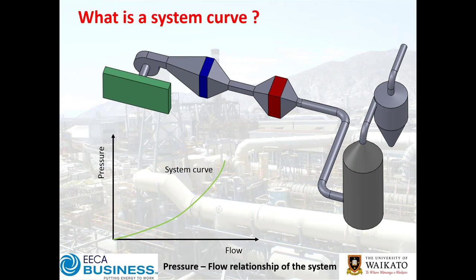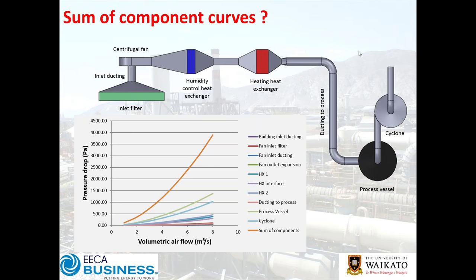How do we come up with our system curve? Looking through a fairly simple system, we've got a single fan driving the process. There's some sort of inlet filter, transition duct into the fan inlet, then post-fan an expansion through some cooling or humidity control device, more duct transitions, a heat exchanger, then ducting to get our treated air to our process vessel, followed by an exhaust cyclone.